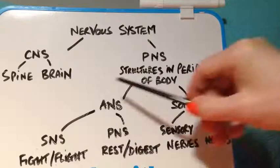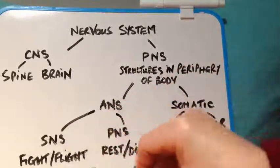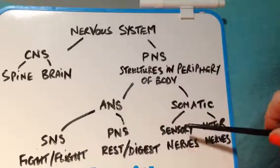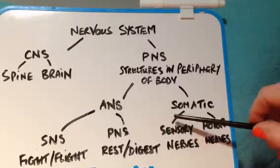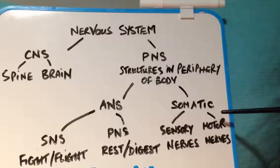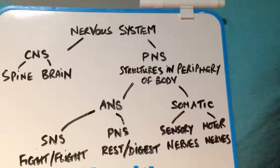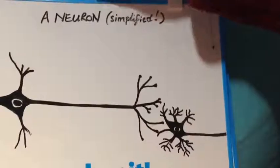We've come across the autonomic nervous system because of the fight-or-flight response, but here we have the somatic nervous system which involves sensory nerves that bring data from the body to the brain, and then motor nerves that take messages from the brain to the body to direct muscle movement. So nerves are made up of individual cells called neurons.